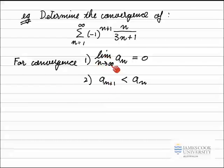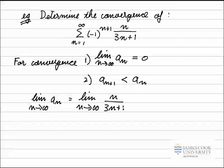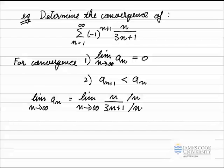Let's look at the first condition: the limit as n approaches infinity of the general term a_n — just the positive part to the right of the minus 1 factor. The limit as n approaches infinity of a_n equals the limit as n approaches infinity of n over 3n plus 1. As n approaches infinity, both the top and bottom approach infinity, so it's indeterminate. The usual approach is to divide top and bottom by the highest power of n, which is n.